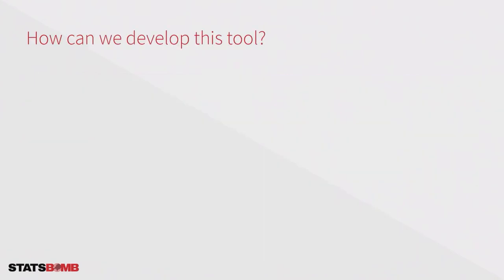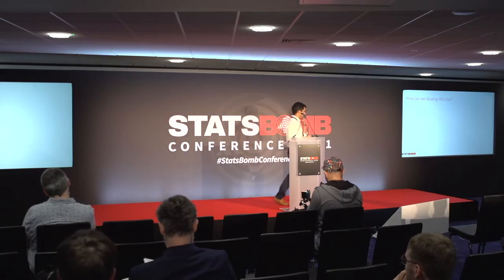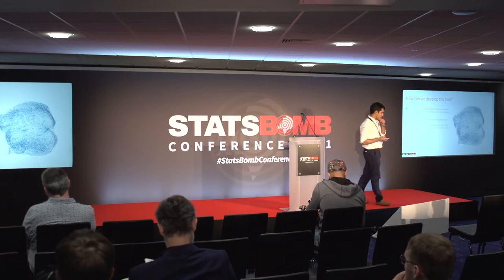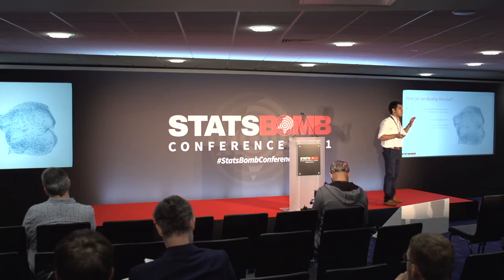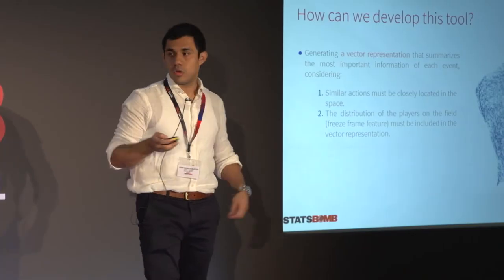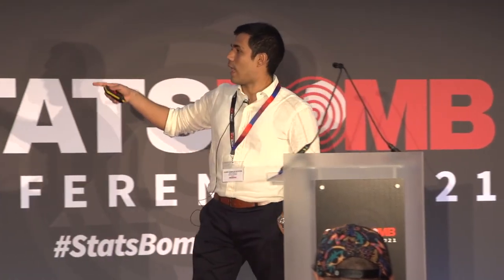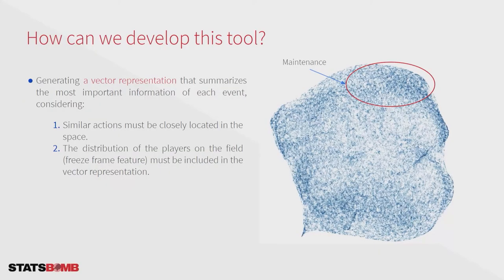So the question is: how can we develop this tool? Technically, I want to generate a vector representation that summarises the most important information of each action, taking into account two things. First, similar actions should be closely located in this space. Second, I want to include the distribution of players when the action occurs in that vector representation. Hopefully, actions that are closely located will mostly belong to the same phase.